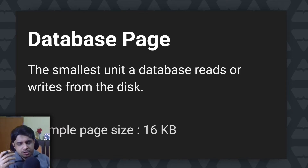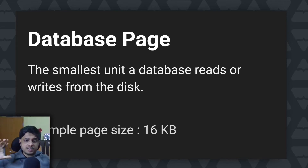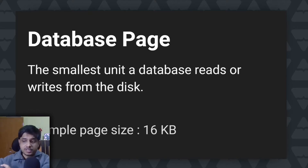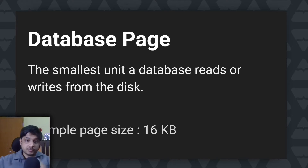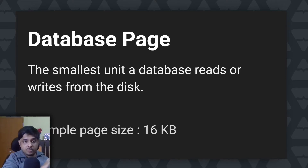So what is the database page? It's the smallest unit of data the database reads and writes from the disk. Let's say the database page size is 16 kilobytes — at once the database will read or write exactly 16 kilobytes from the disk. It cannot read 8 kilobytes or 18 kilobytes. The database system ensures that these reads and writes are atomic: either the full 16 kilobytes will be written, or none of it will be.